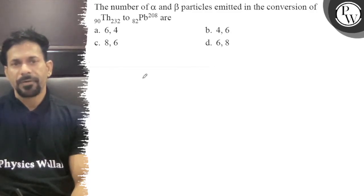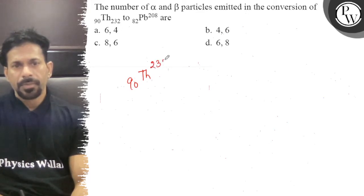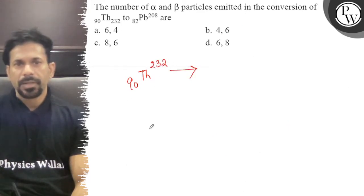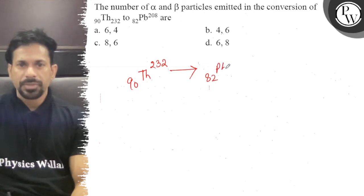Hello, let's see the question. The number of alpha and beta particles emitted in the conversion of 90Th232 to 82Pb206. So 90 thorium 232 has converted to 82 Pb206.